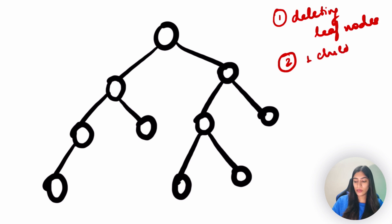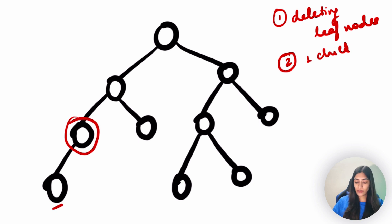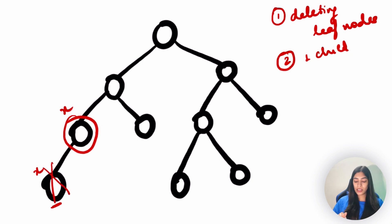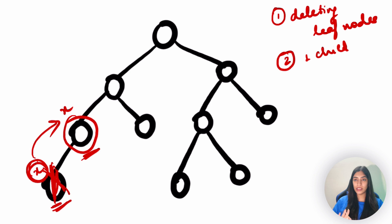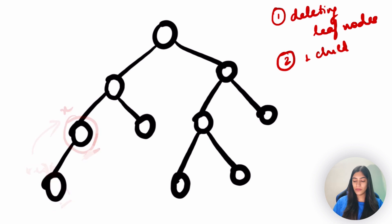The second case is when there is one child of the node that we are deleting. Suppose this node has only one child. Whatever value was there - suppose x was there - we just assign the child's value and then delete this particular node. So essentially, I'm assigning whatever node was below and deleting the old value. This is also fairly easy when you have only one child.